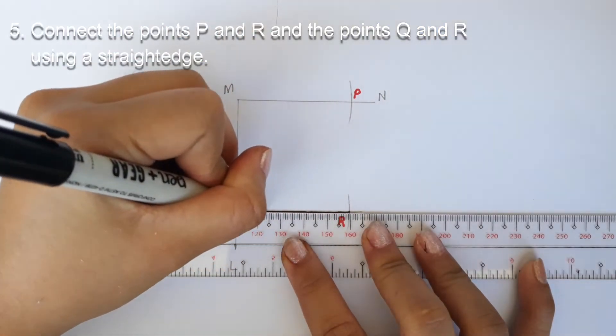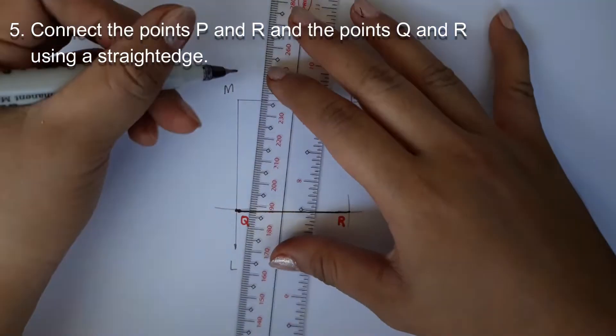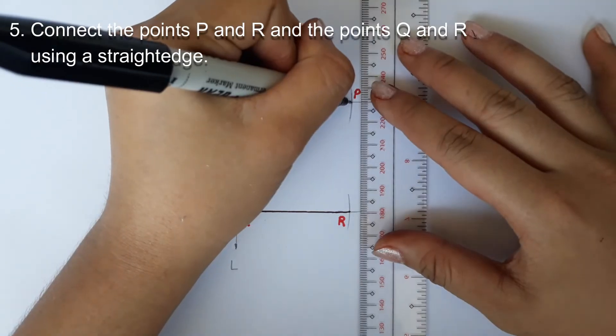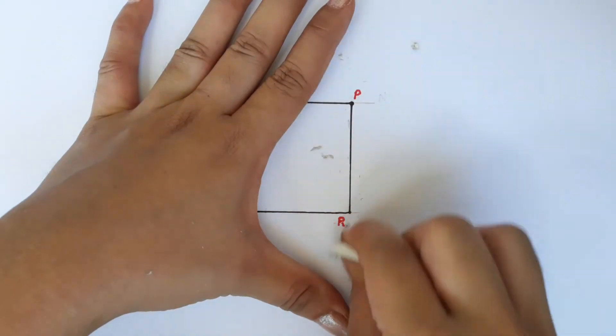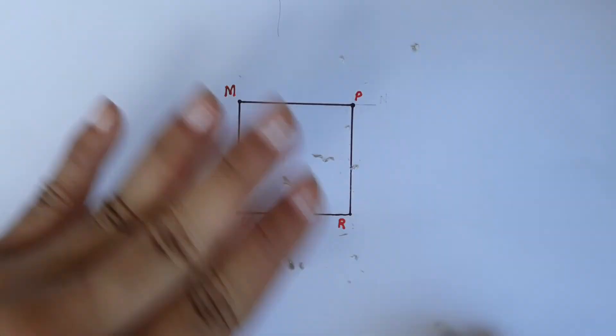Connect the points P and R and the points Q and R using a straight edge. The figure PMQR is a square. You may erase other unnecessary constructions if you wish.